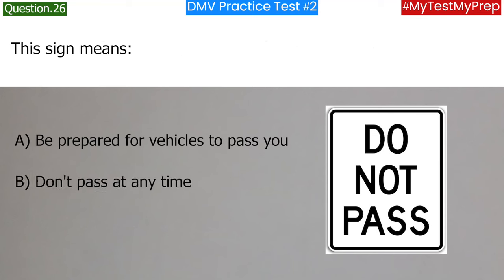There is a railroad crossing ahead and you can't see if any trains are coming until you are almost ready to cross the tracks. How fast should you be driving? a. 25 miles per hour; b. 15 miles per hour; c. 10 miles per hour. Answer: b. 15 miles per hour.